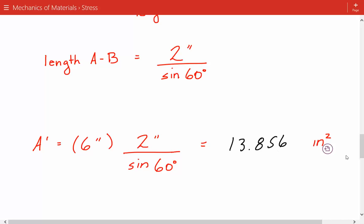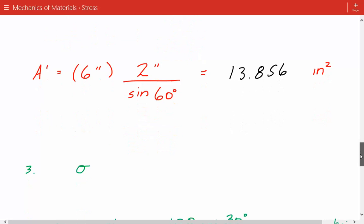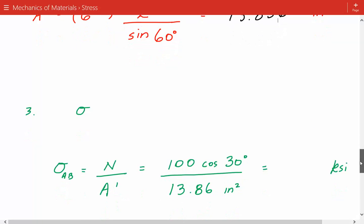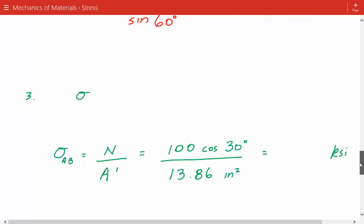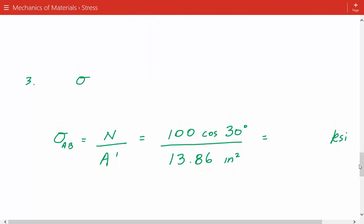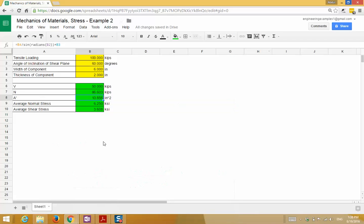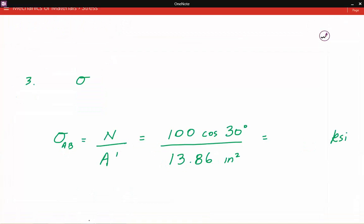Now we can easily calculate the average normal stress and average shear stress. So average normal stress is equal to the normal force divided by the area. And that's equal to 6.25 ksi.